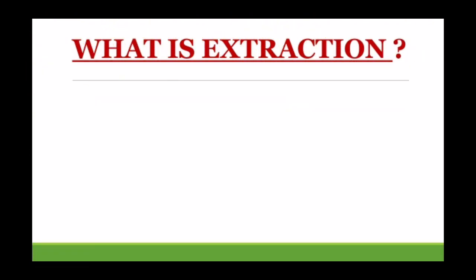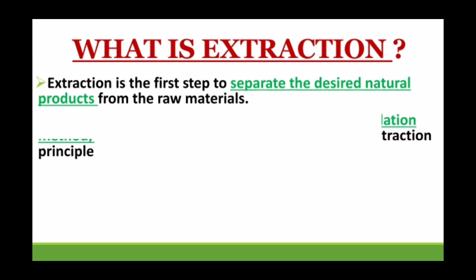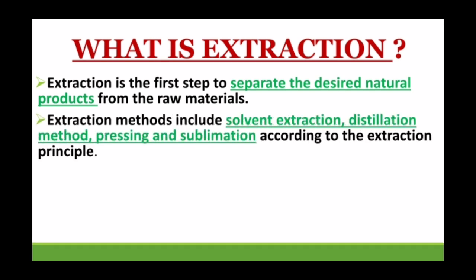Let's begin the discussion. Extraction is a process to separate desired natural products from raw materials. For example, clove oil is extracted from clove — the desired natural product is clove oil and the raw material is clove. Separating the clove oil from the clove is what we call extraction.